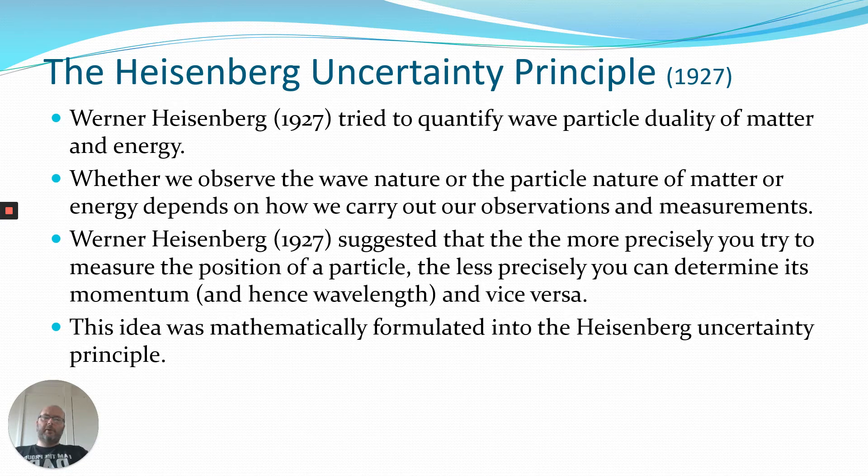Werner Heisenberg, around about 1927, put this into a mathematical formulation. But the basic idea is quite simple. It basically says that the more precisely you can measure the position of a particle, the less precisely you can measure its momentum and therefore wavelength.